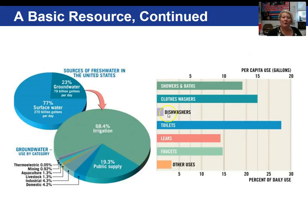Here's how we utilize our water in gallons per day. Showers and baths, toilets — not very efficient. Leaking faucets waste a lot of water. Dishwashers, on the other hand, are quite efficient.